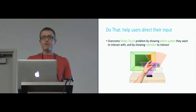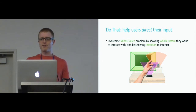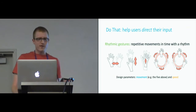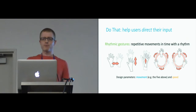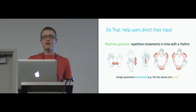Next we looked at the Do That part of the interaction, which tells users how to direct their input towards a particular system or device. This helps overcome the Midas touch problem because the user shows which system they want to interact with and shows their intention to interact. The image there shows how multiple devices might be sensing input from the same space, potentially all acting upon any movements the user makes. By directing input towards one system in particular, the others know that any actions that follow are not intended for them. With this interaction, users direct their input using what we call rhythmic gestures — gestures repeated in time with a rhythm shown using an animation. By combining different hand movements with different speeds, we can create a large design space from just a few simple gestures.